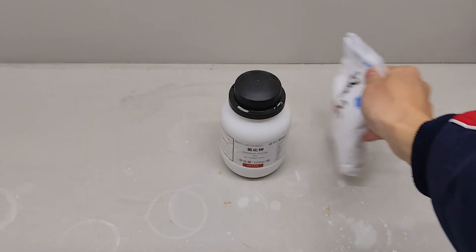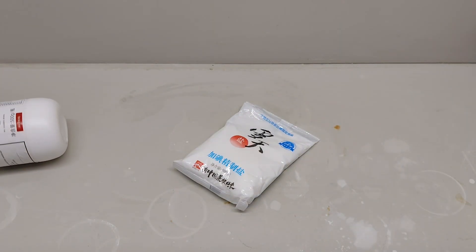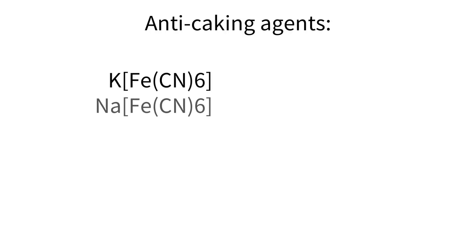I just use table salt to replace the chemical used in lab. The difference is that the table salt used in food is usually containing anti-caking agents. Most of them are substances like potassium ferrocyanide, sodium ferrocyanide, ferric ammonium citrate, silicon dioxide, and calcium silicate.